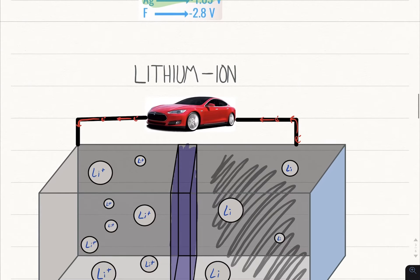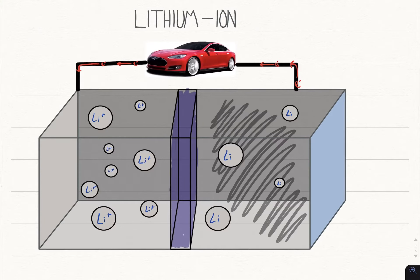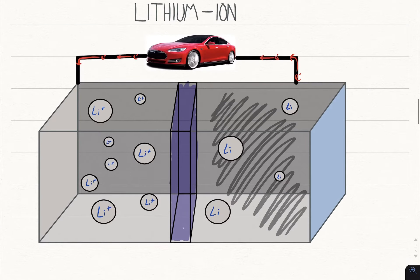Now it looks kind of daunting, but it's pretty simple. Basically you're going to have your three main components again: you have your cathode, you have your electrolyte, and you have your anode.